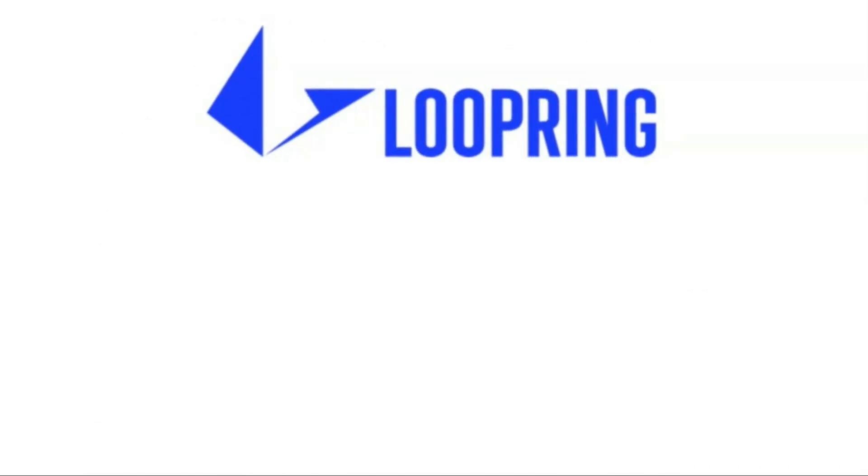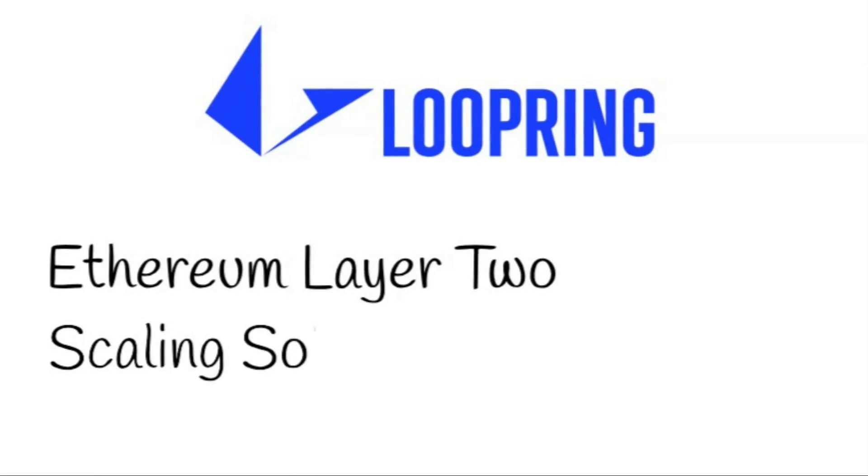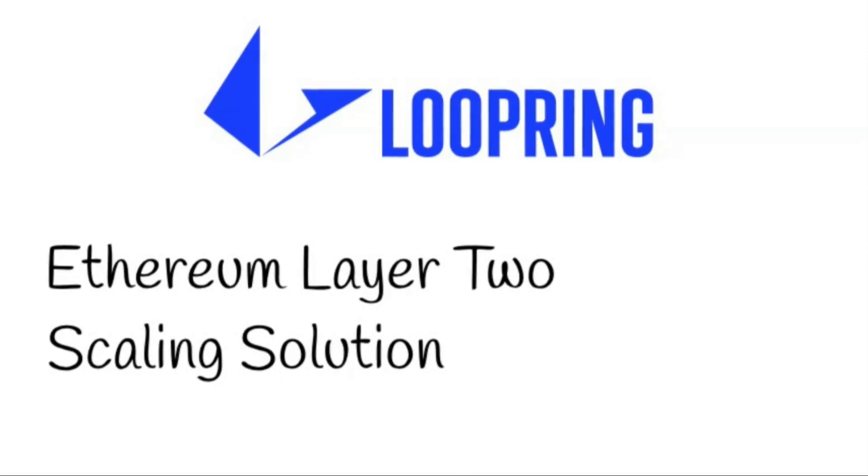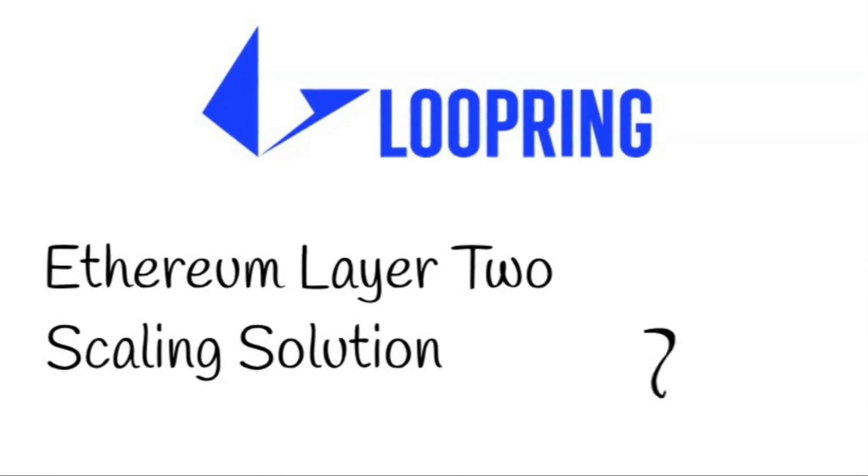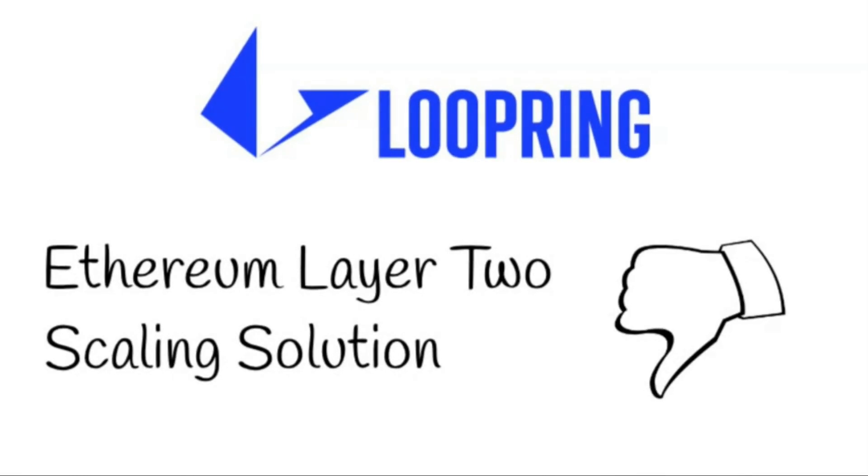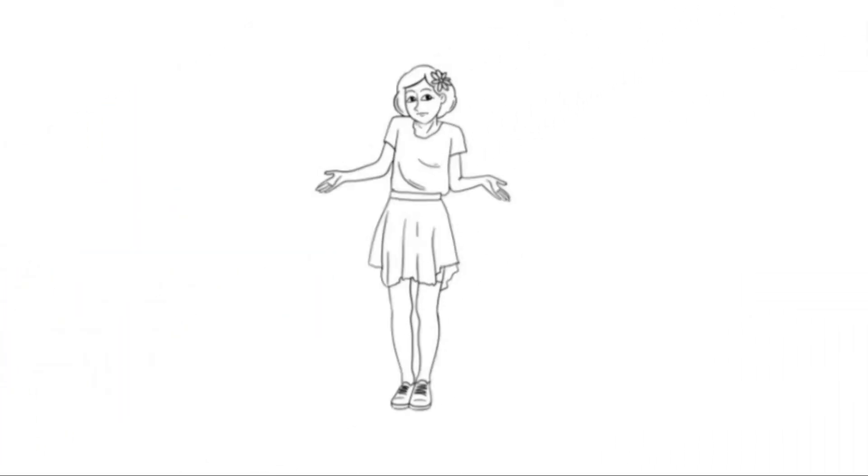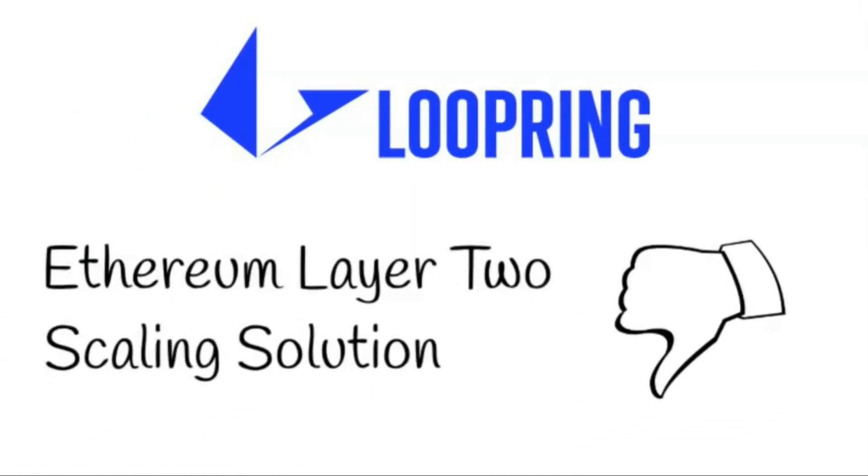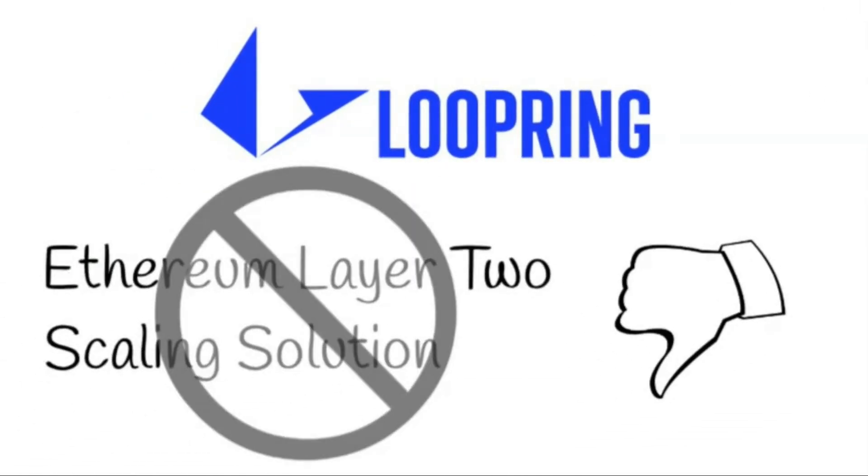So what is Loopring? As I mentioned in my introduction, Loopring is a layer two scaling solution for the Ethereum network. While this is certainly a true statement, it also significantly undersells what the Loopring team is building. You might ask how scaling Ethereum could possibly be undersold, but I think if you focus purely on the subject of scaling, you don't really appreciate everything that is going on with this project.